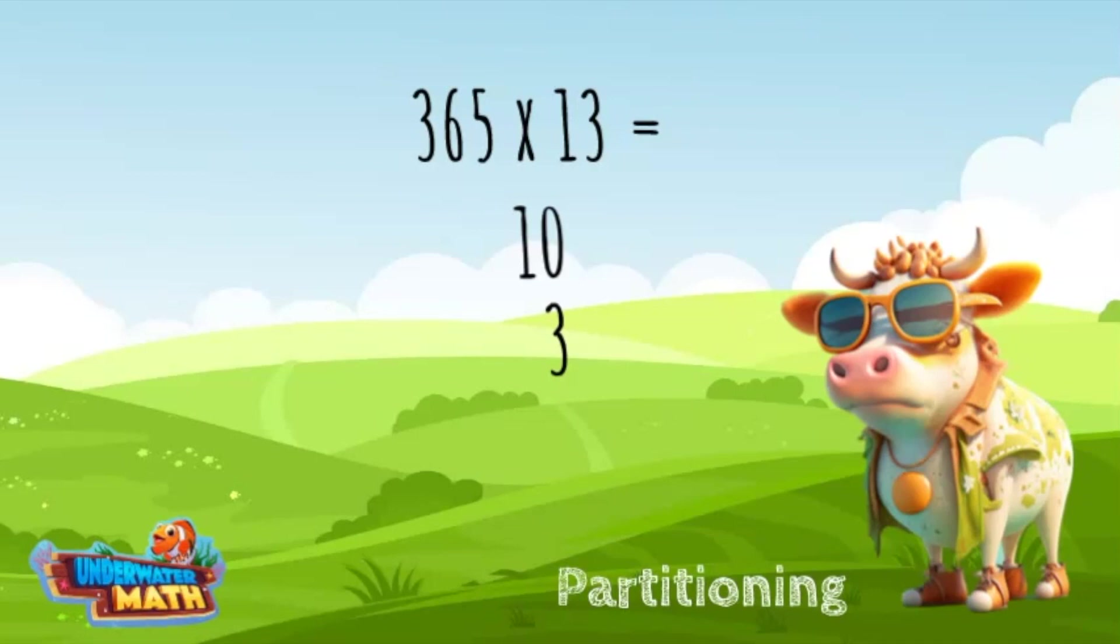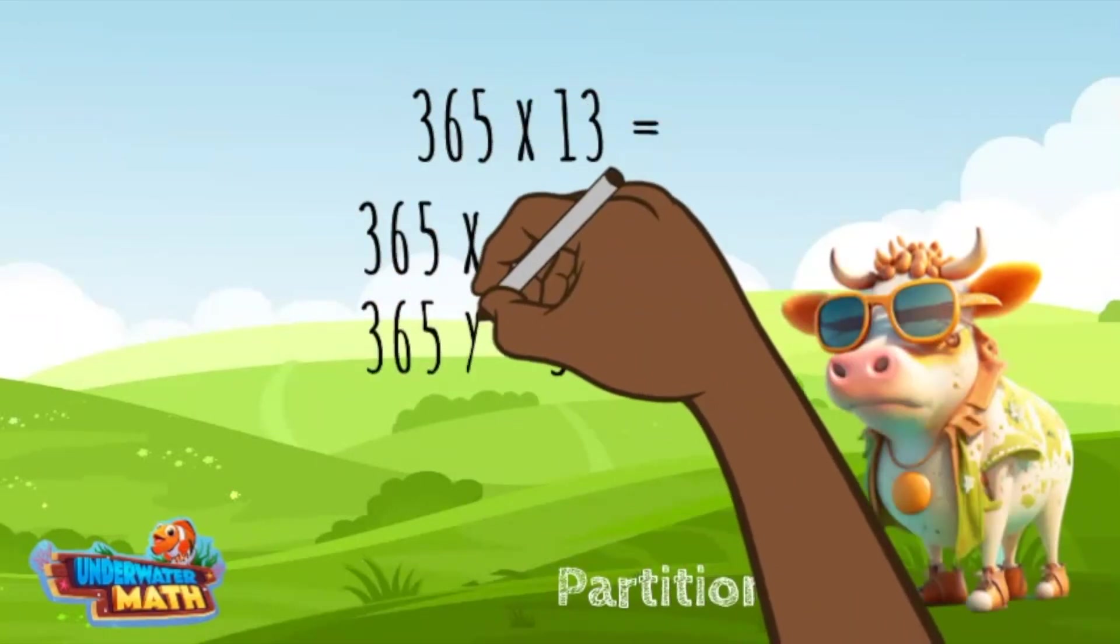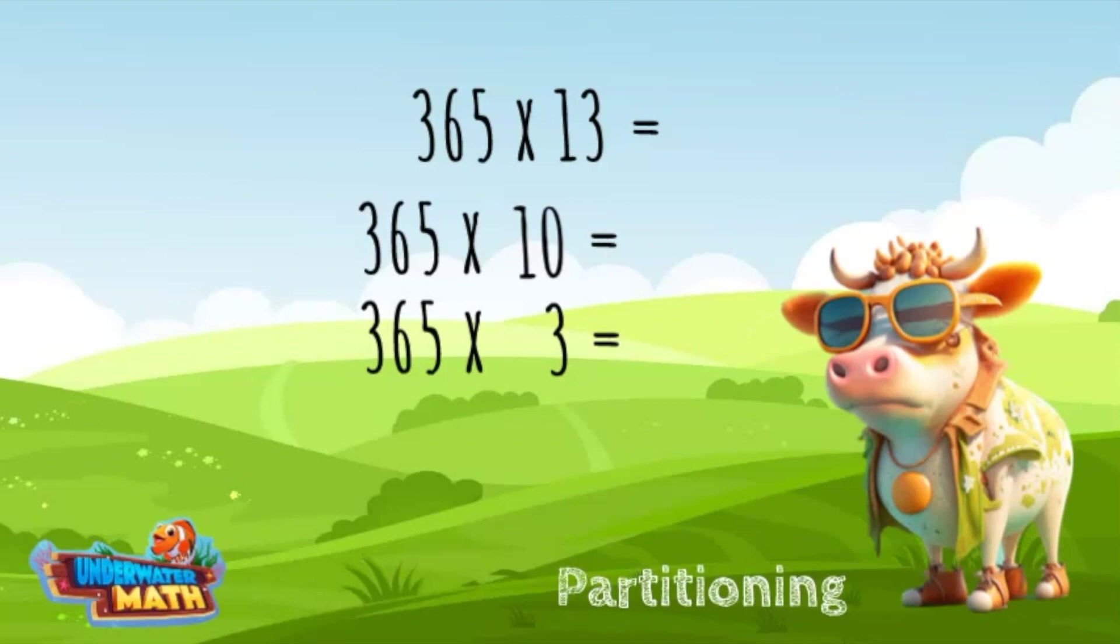I can now multiply 365 times 10 and 365 times 3. When multiplying by 10, I add a 0 to the end of the other factor. The product of this problem is 3650.